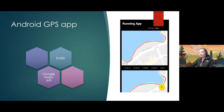The app tracks measurements such as the amount of kilometers traveled, the time taken to travel, as well as the average speed of travel. These are all great things to measure when trying to keep track of your fitness goals and progress.